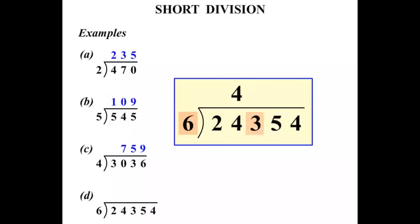6 into 3 won't go. But we've started writing our numbers. So we must write 0 in that place. We haven't used the 3. So let's bring it over. 6 into 35 goes 5 times.